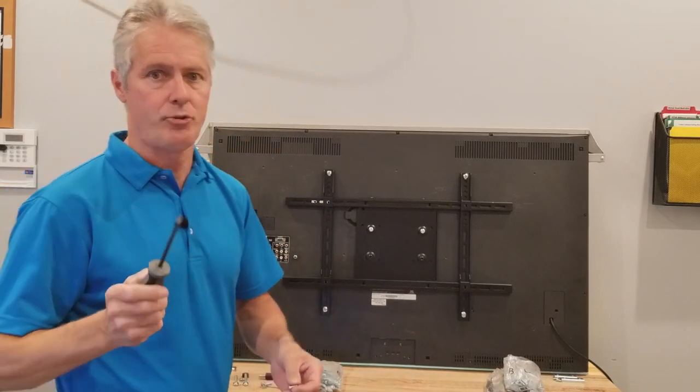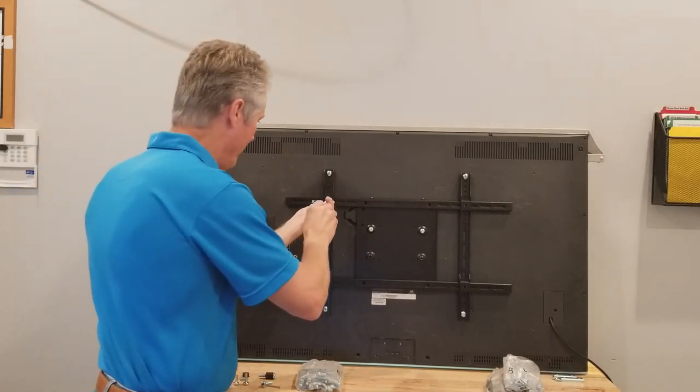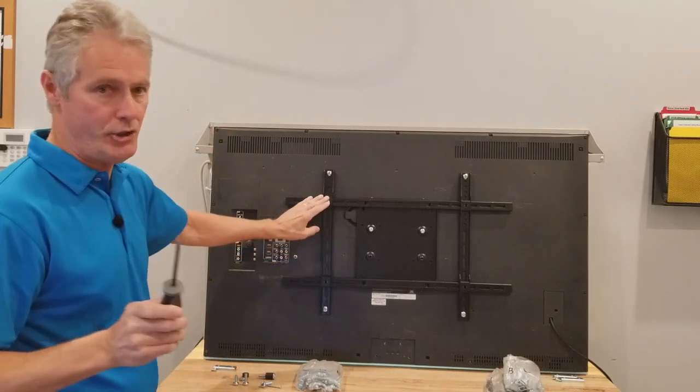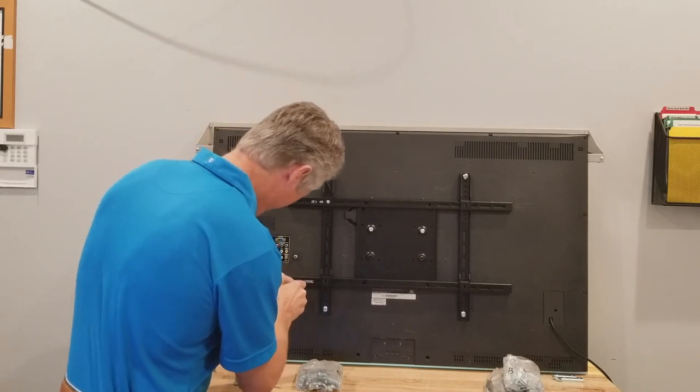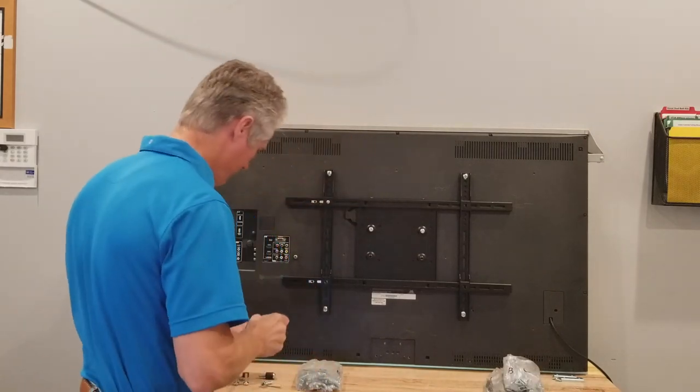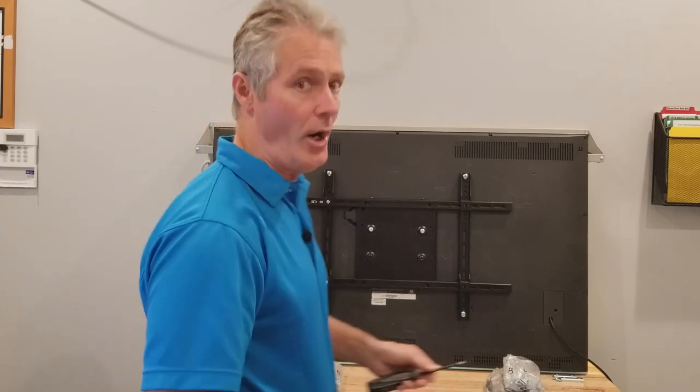You got four Phillips head screws in the bag—they're little small screws. Put them in for the sliders. I haven't tightened it up yet and I'll show you why in a second. Just get it started.